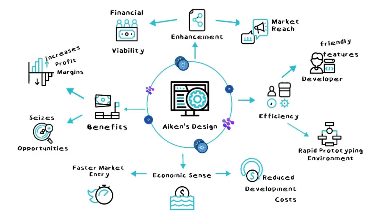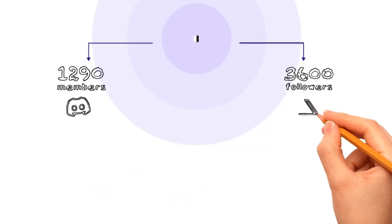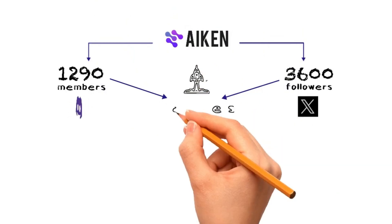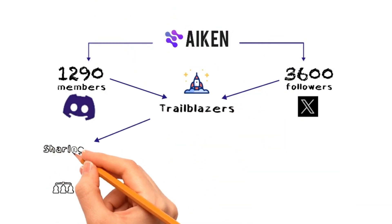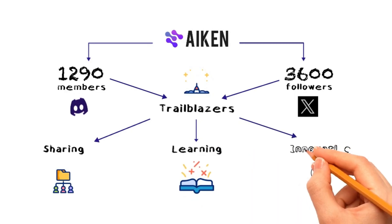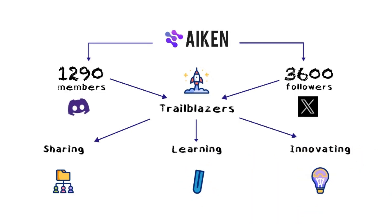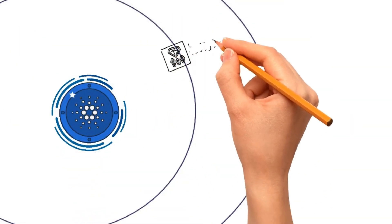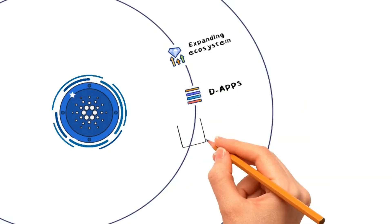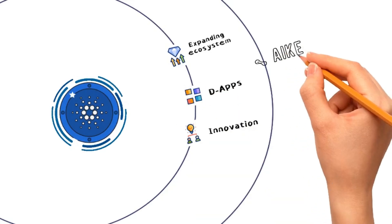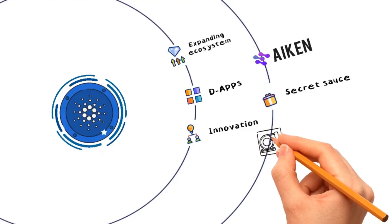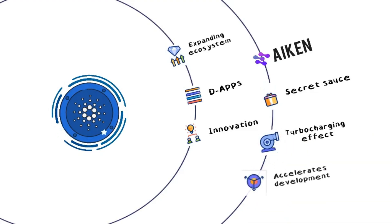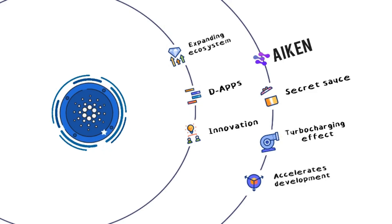With Aiken's roadmap charging ahead, the community is pulsing with activity — over 1,290 members on Discord and 3,600 followers on Twitter sharing, learning, and innovating together. This isn't just a number; it's a legion of trailblazers. Cardano's potential is vast, with a tapestry of dApps unfolding across its network. Aiken is the secret sauce speeding up the dev magic — like turbocharging your car while everyone else is still warming up their engines.